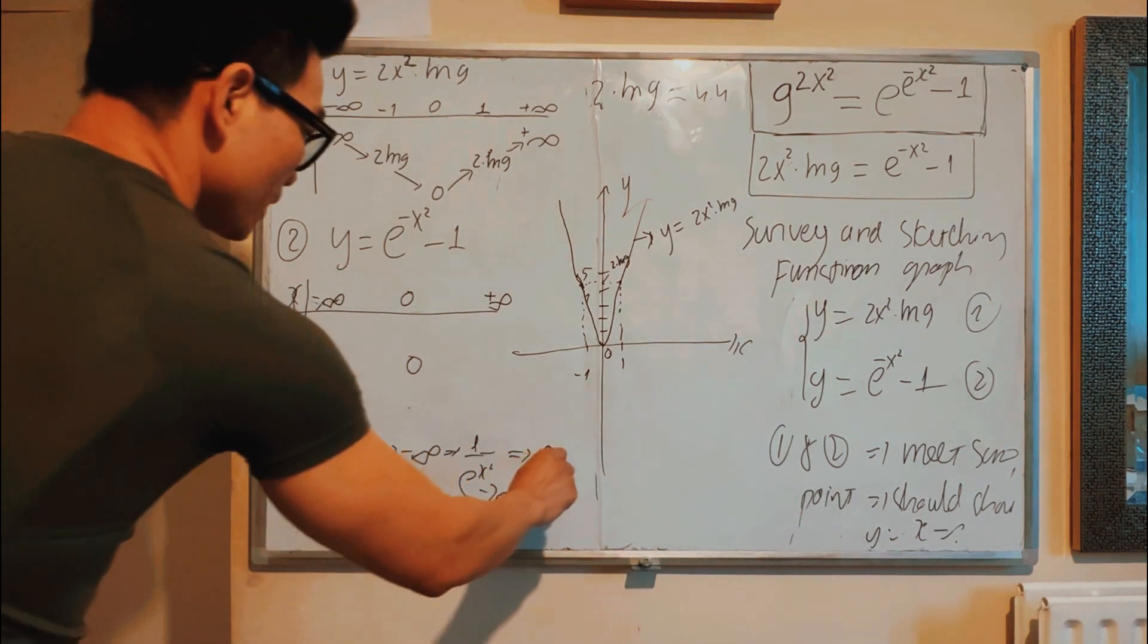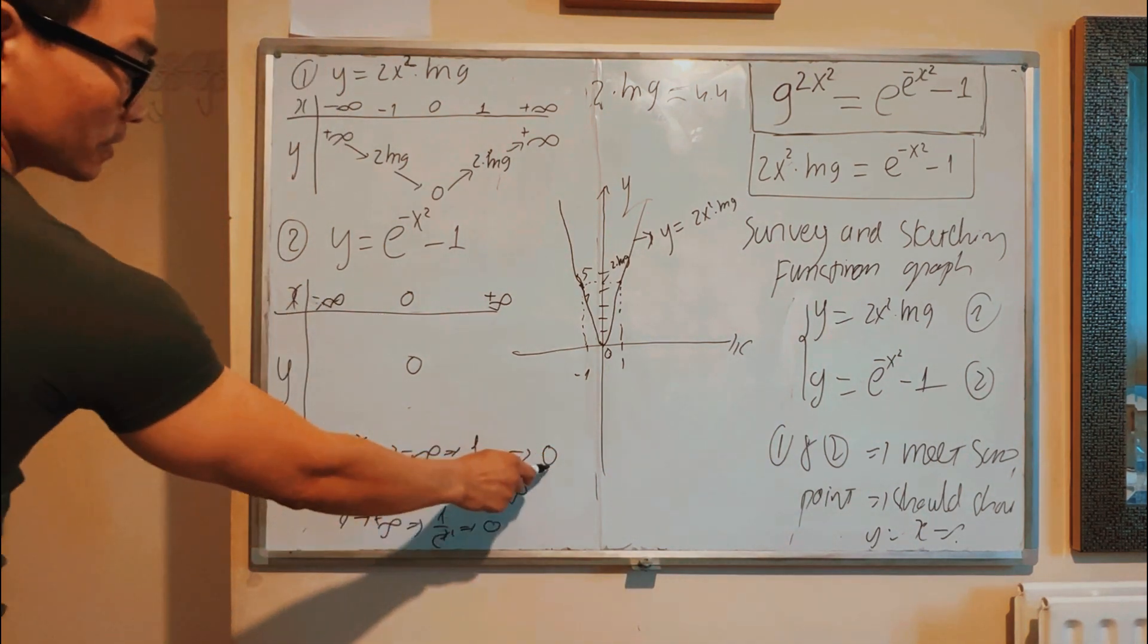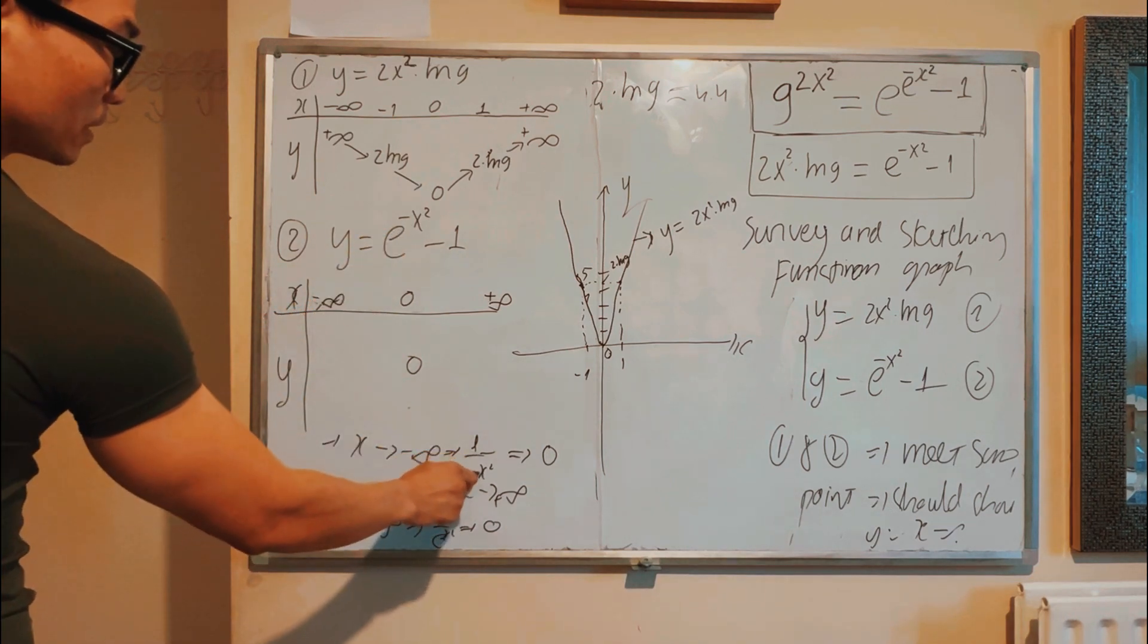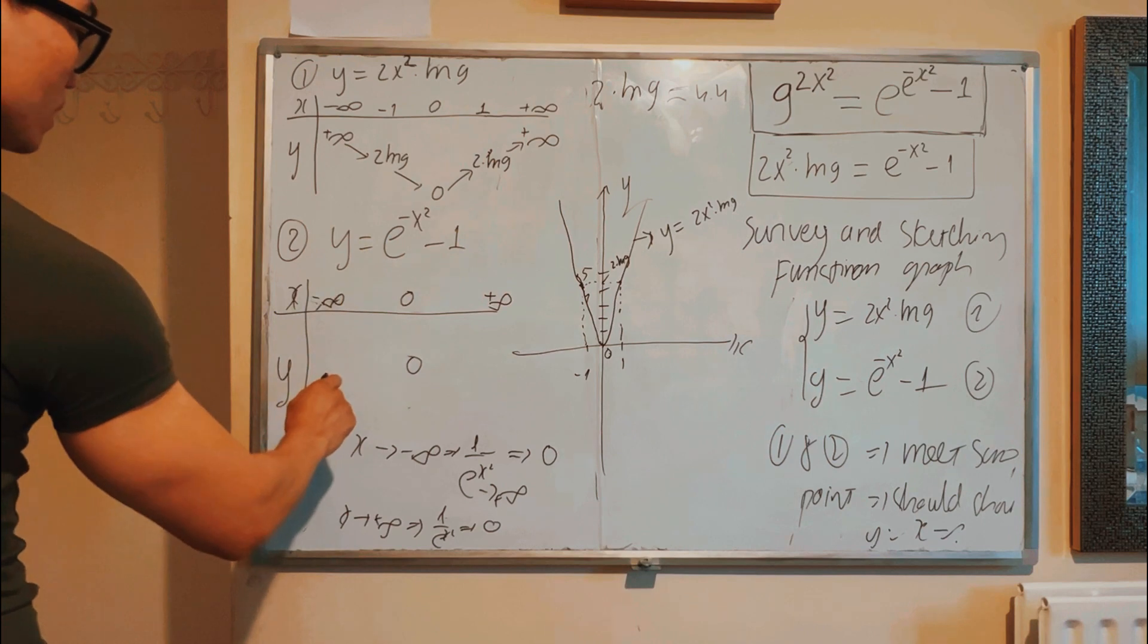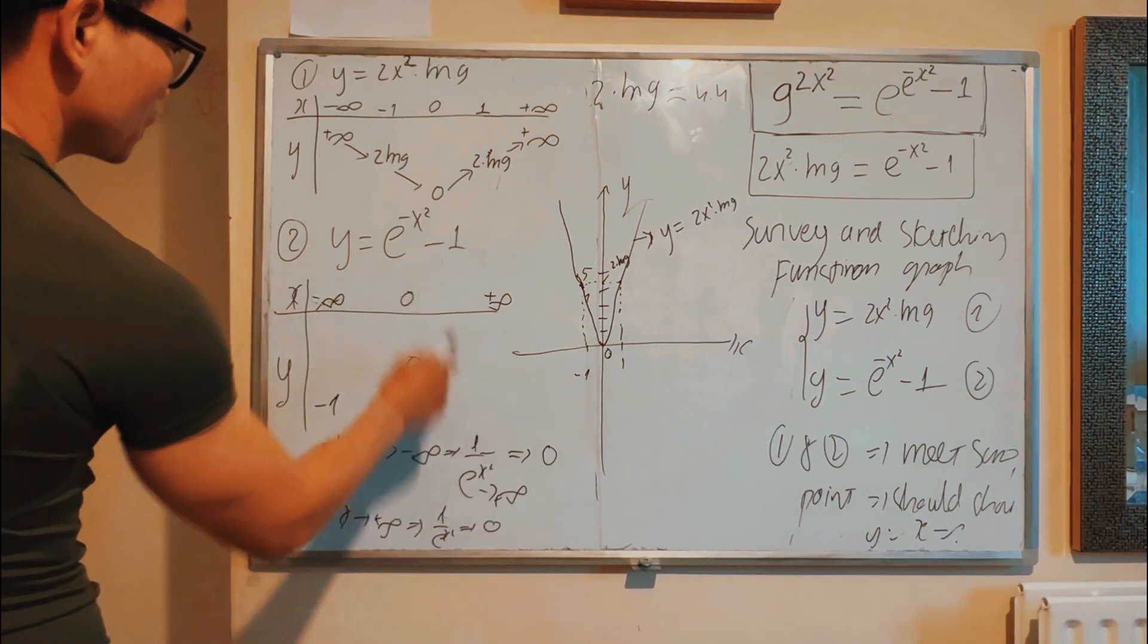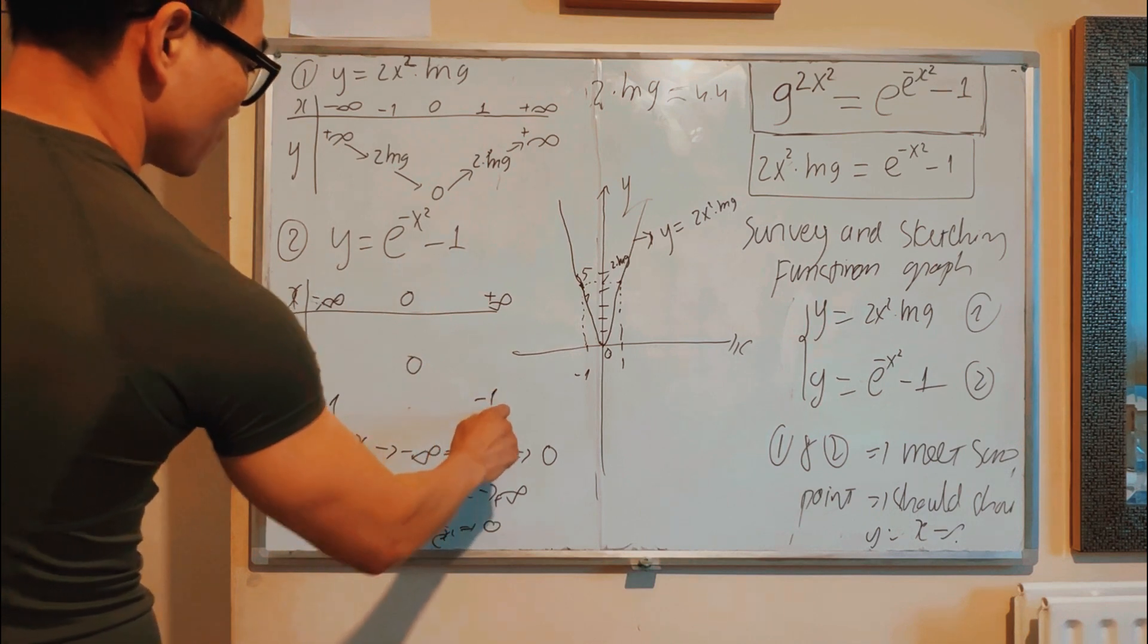Same, if X becomes positive infinity, then 1/e^(x²) becomes zero, so y approaches negative 1. If X becomes 1, 1/e^(x²) equals... so y equals negative 1. That one the same, you substitute here, that one is negative 1 as well.